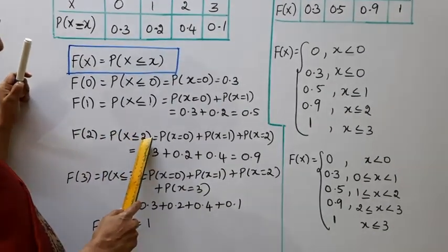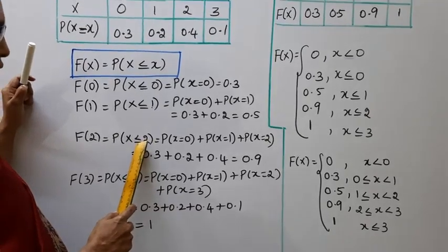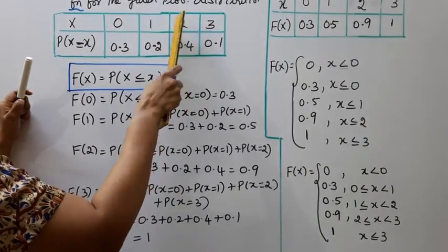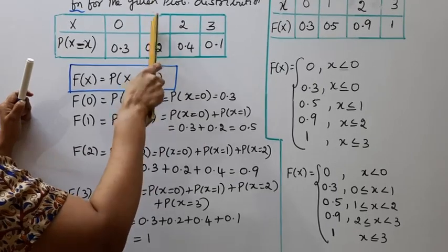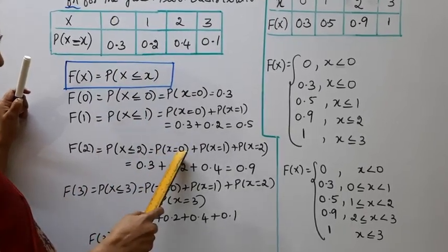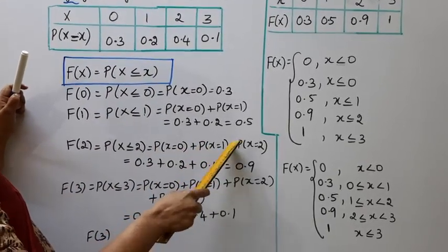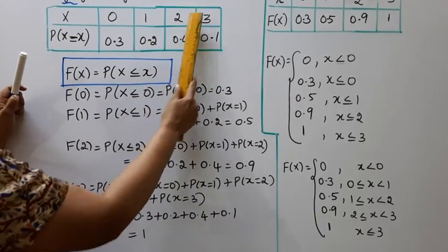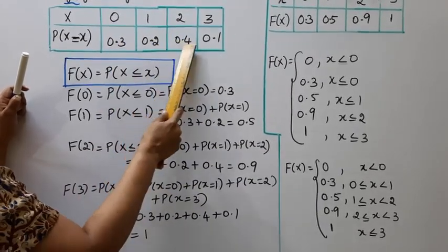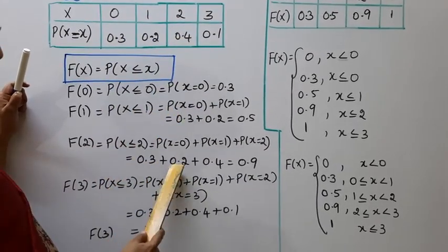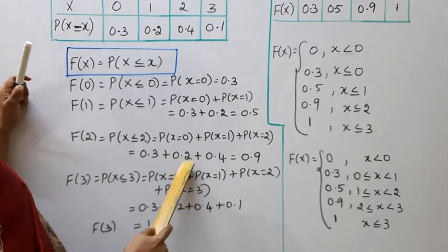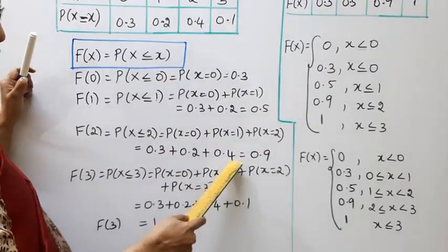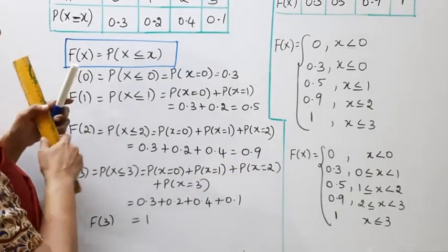P(X ≤ 2) now: values 2, 1, 0 — so P(X=0) plus P(X=1) plus P(X=2). It is very clear: 0.3 plus 0.2 plus 0.4. 0.3 plus 0.2 is already 0.5, and 0.5 plus 0.4 equals 0.9.